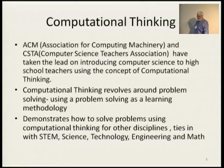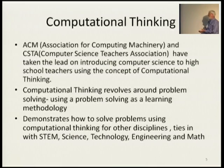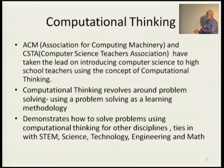Computational thinking demonstrates how to solve problems for other disciplines and ties in with STEM — science, technology, engineering, and math. For example, if you're doing biology and you have a problem where different species are competing for the same resources, this would be a great thing to set up with computer science. However, it's not really done that much, but this is what the CSTA and ACM emphasizes as computational thinking.